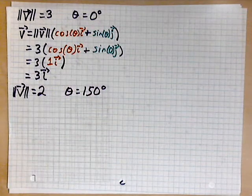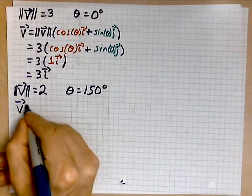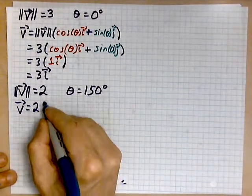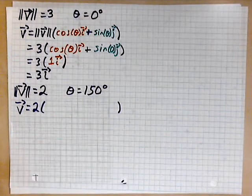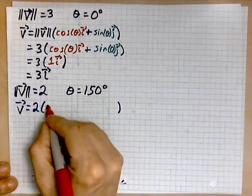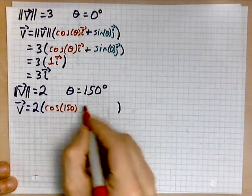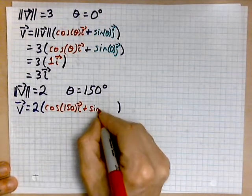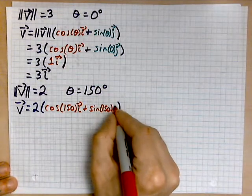You do the following. So, v equals its magnitude, which is 2. And this multiplies the unit vector in the same direction. So, that will look like this. Cosine of 150, and that is your i, plus the sine of 150, and that is your j.